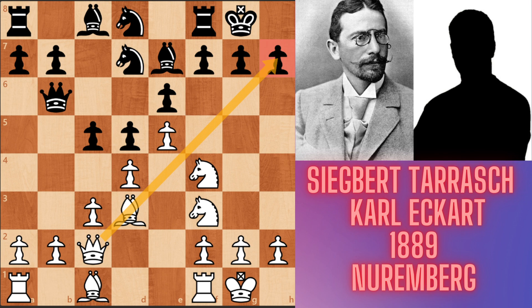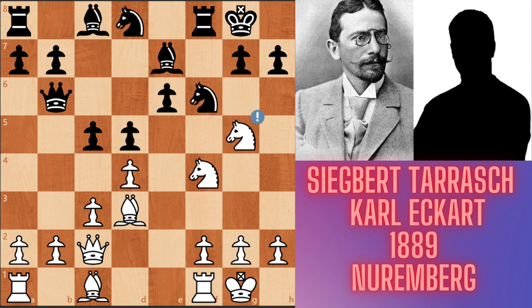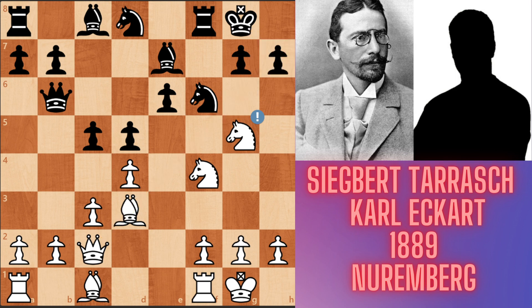Now Black made a blunder: f5, because White now has an en passant move. White played exf6 en passant, and after Knight takes f6, the Knight jumps to g5. Now both the Knight, Bishop, and Queen are attacking the weak h7 pawn, which is only defended by the Black King and Black Knight. Black played g6.